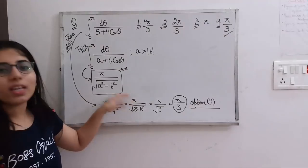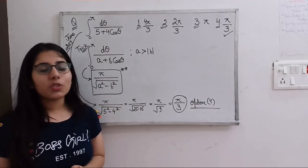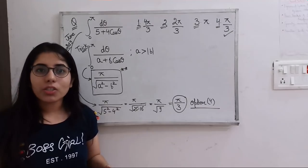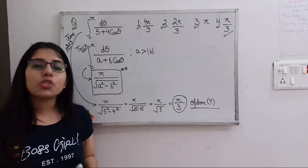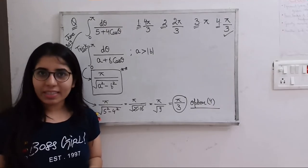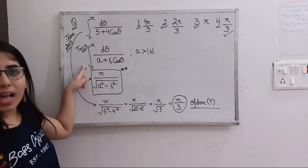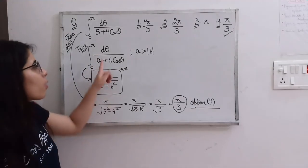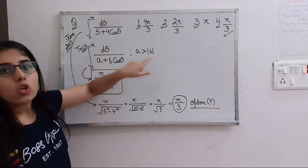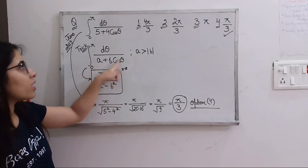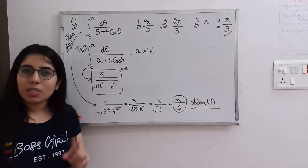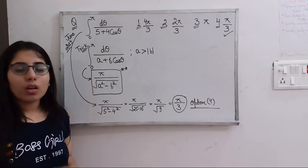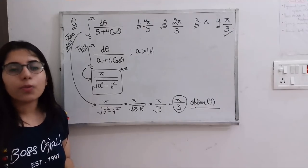We have a trick — a general formula — which is going to help us get the answer very easily and in very less time. As we know, time matters a lot in the exam, so we should try to save time and have techniques to get the answer easily. The general formula or short trick is: integration from 0 to π of dθ upon (a + b·cosθ), when a is greater than the modulus of b. We need to focus on the limits of integration: 0 to π.